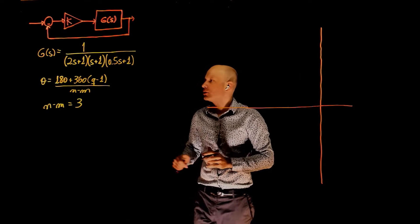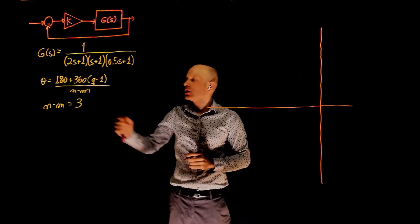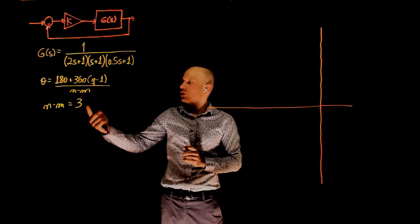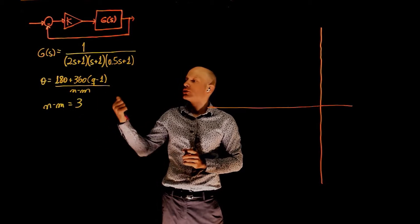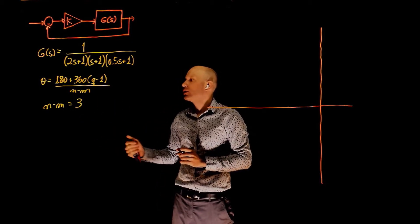The angle of those asymptotes is given by this formula again. And now q goes from one to three, so you have q equals to one, q equals to two, and q equals to three.